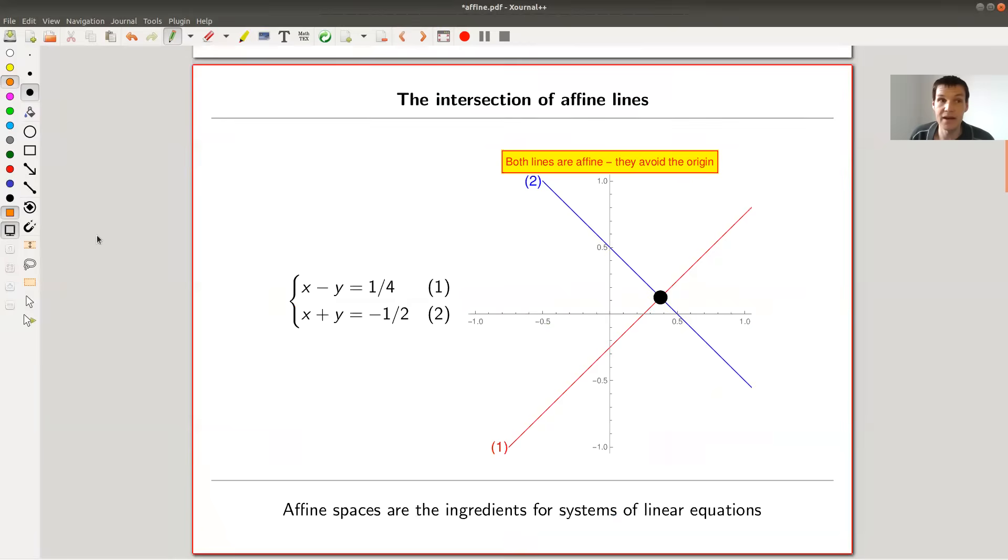But fixing the origin seems to be a little bit artificial and affine theory gets rid of this choice. Let me just jump right into it. So let me give you an example where everything actually comes from. So I have two lines: line two and line one. They're given in coordinate special formulas. Over here, formulas don't matter so much. But as you can see, they totally avoid the origin. And they're really affine maps, affine lines. Both of them are affine lines. They avoid the origin.